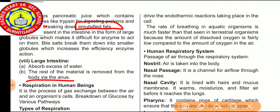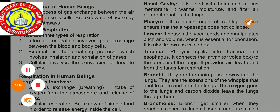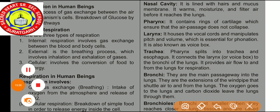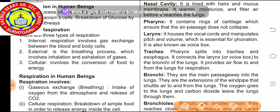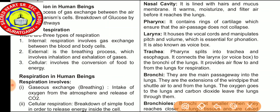Now we move on to respiration in human beings. Respiration is the process of gas exchange between the air and an organism's cells, involving the breakdown of glucose by various pathways — it is just opposite to photosynthesis. There are three types of respiration: internal respiration involves gas exchange between the blood and body cells; external respiration is the breathing process involving inhalation and exhalation; and cellular respiration involves the conversion of food to energy.